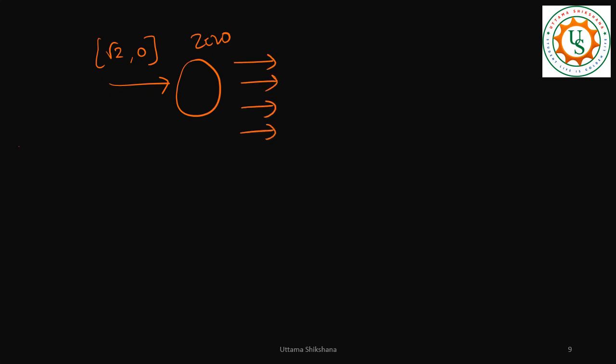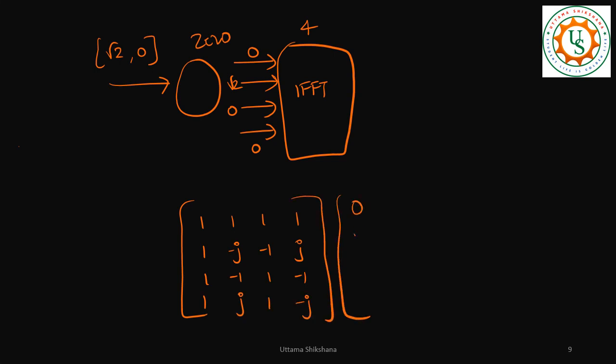Which is a 4-point IFFT. So let's say I will put zeros on either side: 0, √2, 0, 0. So what is my 4-point DFT equation? Then my input is 0, √2, 0, 0. So what is the output?